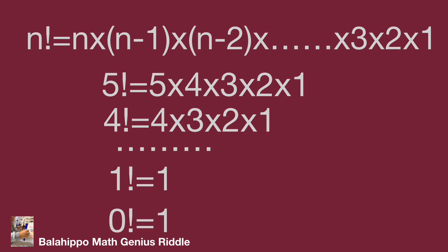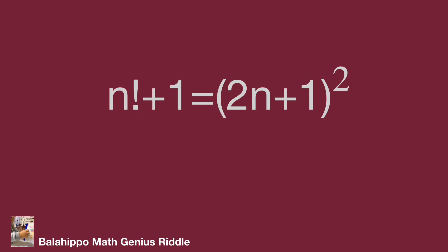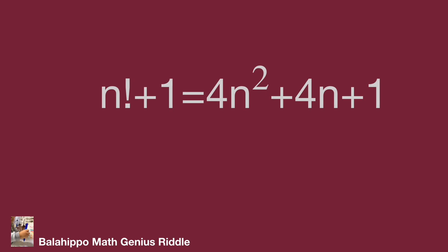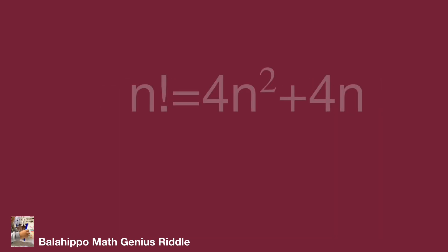Okay, let's go back to the question. n factorial plus 1 equals the quantity 2n plus 1 squared. Expanding the square on the right side gives 4n squared plus 4n plus 1. Simplifying, n factorial equals 4n squared plus 4n.